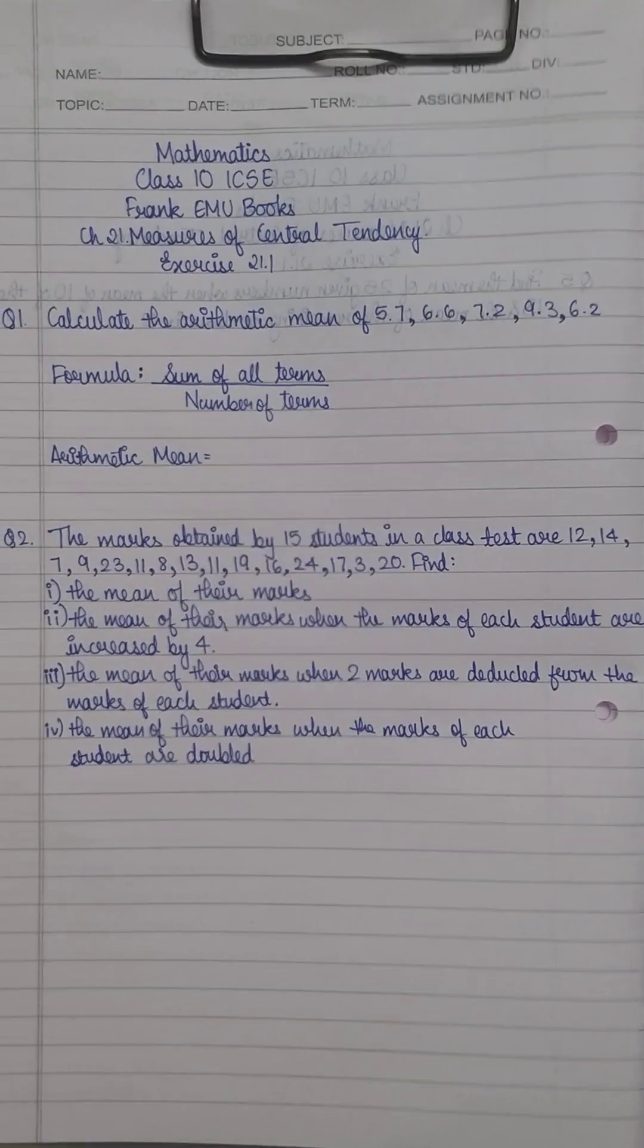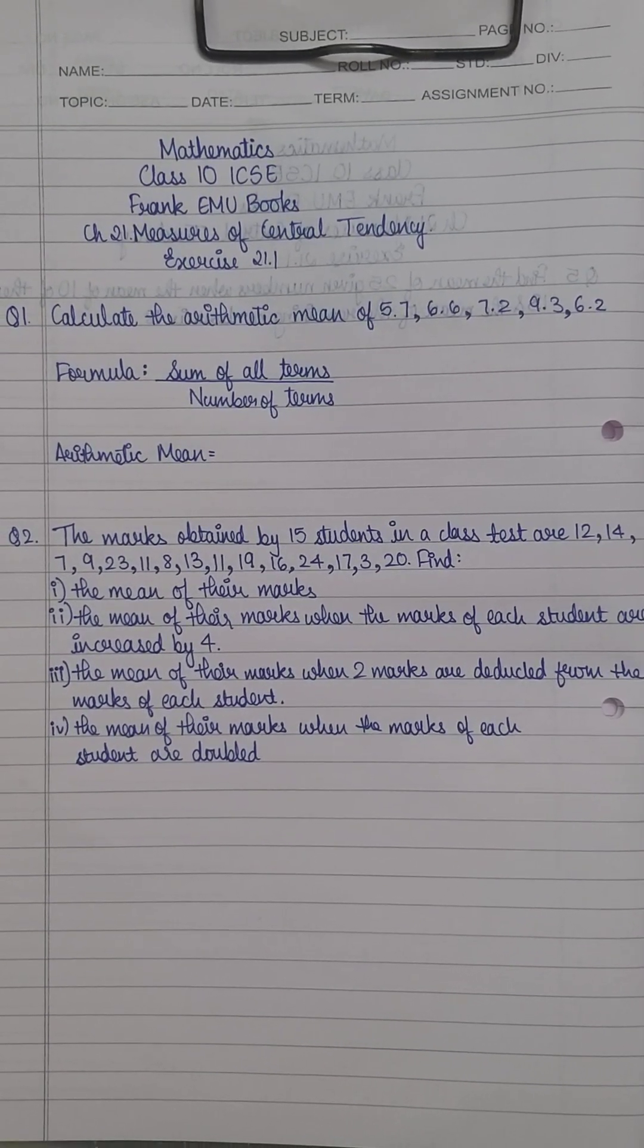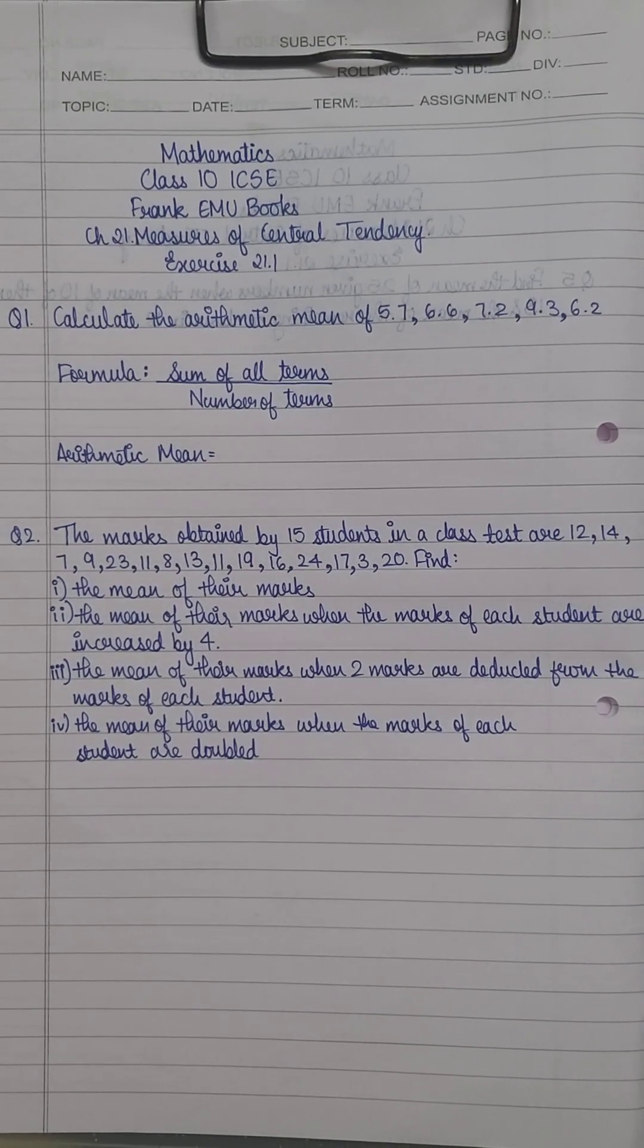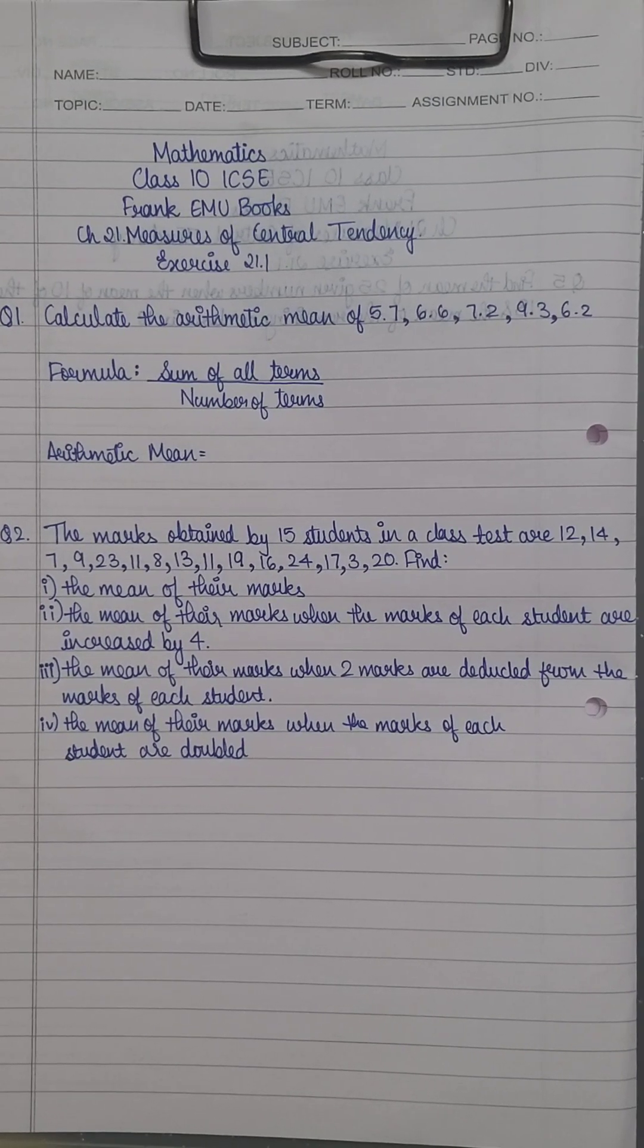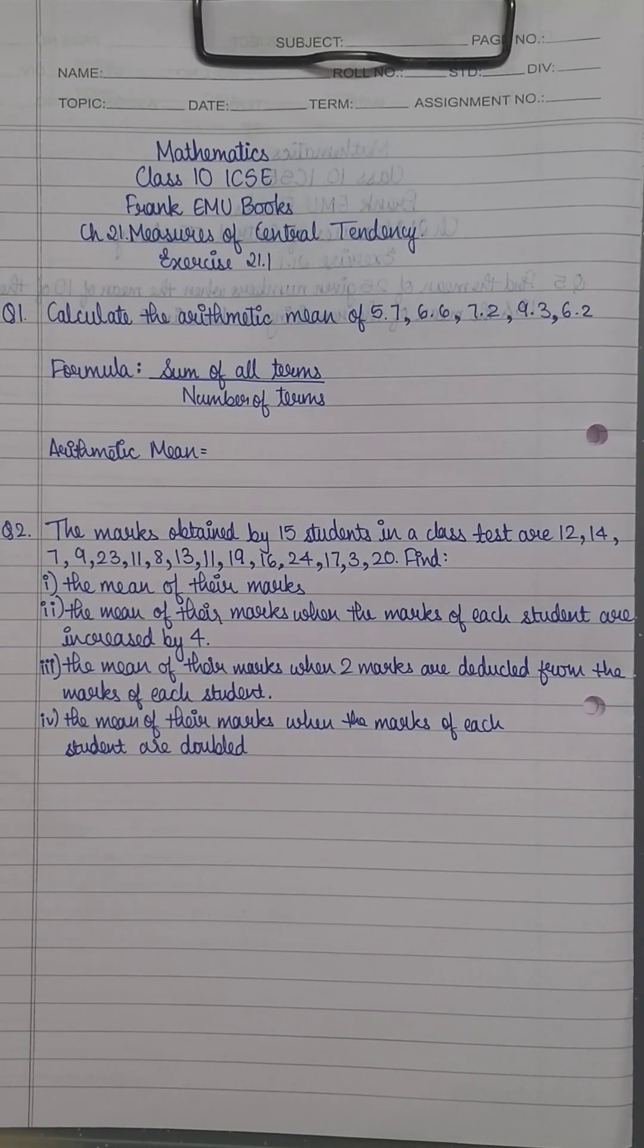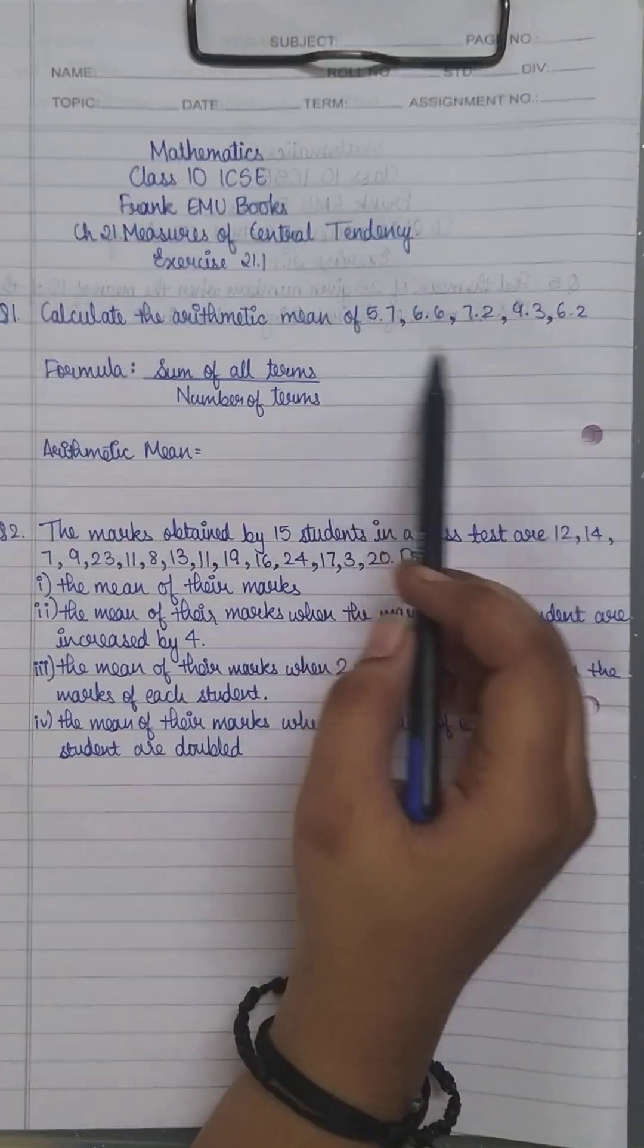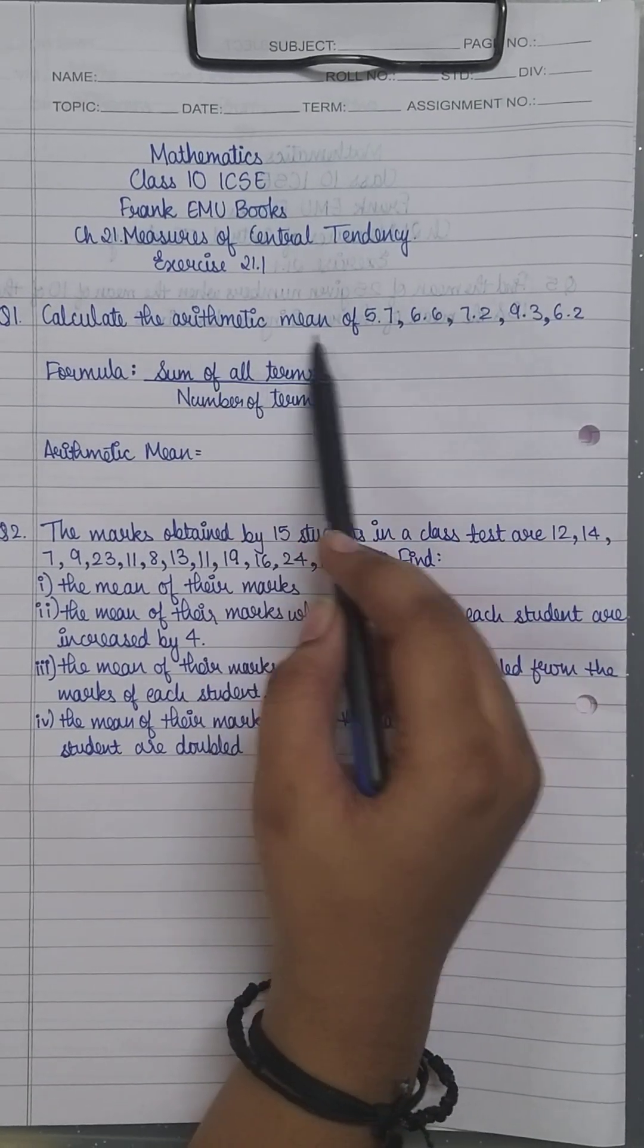We have questions 1 and 2, which are very basic questions covering the first concept: arithmetic mean. You need to understand that arithmetic mean is the same as what you've learned as average, which is sum of all terms divided by the number of terms. Here you're given some terms and asked to find the arithmetic mean using this formula.